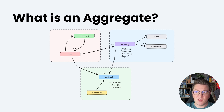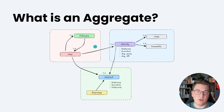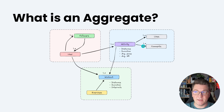Starting with what an aggregate is — from the diagram you can see here, let's define it as a collection of objects that are somehow grouped together. We have three aggregates here: one containing the user with their followers, another containing the activity and the corresponding likes and comments, and another containing the workout together with the respective exercises.